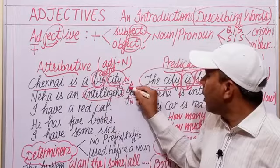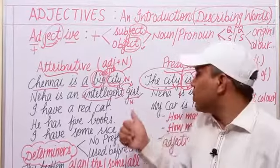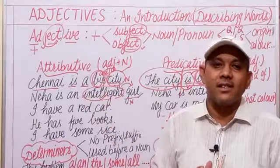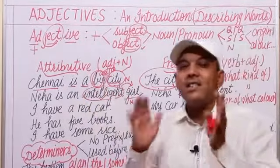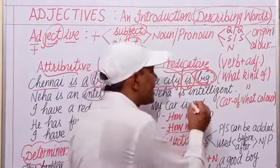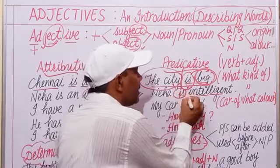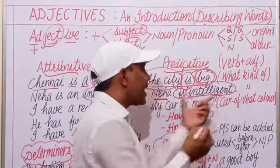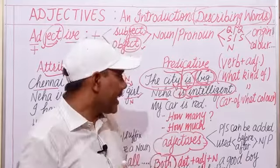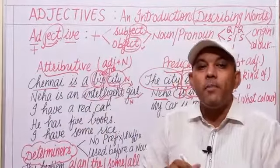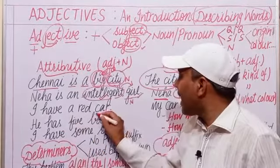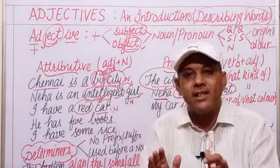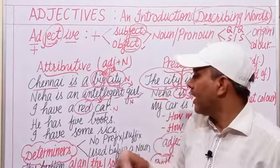The word 'intelligent' modifies or defines the noun and adds something to it — that is why it is used as an adjective. When used before a noun, it is attributive use. But in 'Neha is intelligent,' it is used after the verb 'is,' making it predicative use. Similarly, 'I have a red car' — 'red' is used before the noun 'car,' so it is attributive.